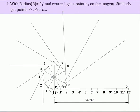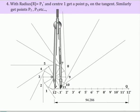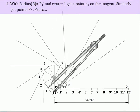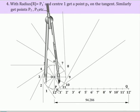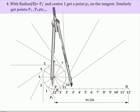With radius equal to P1 dash and center 1, get a point P1 on the tangent. Similarly, get points P2, P3, etc.